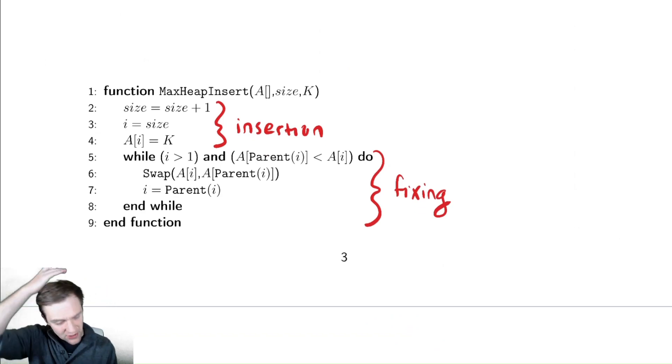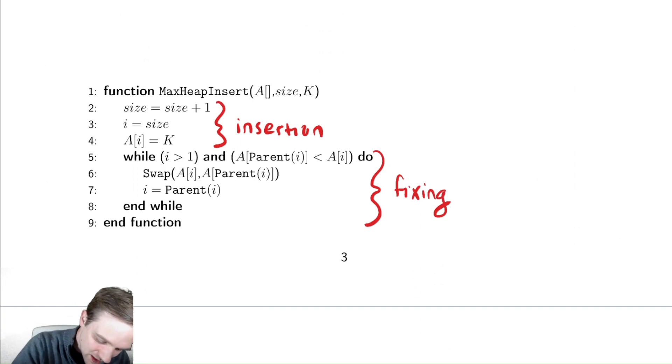How long does this take? It looks like it might be complicated, right? Because we have that parent call there. But thankfully, parent is a very simple method. Parent was literally just i divided by two, rounded down.